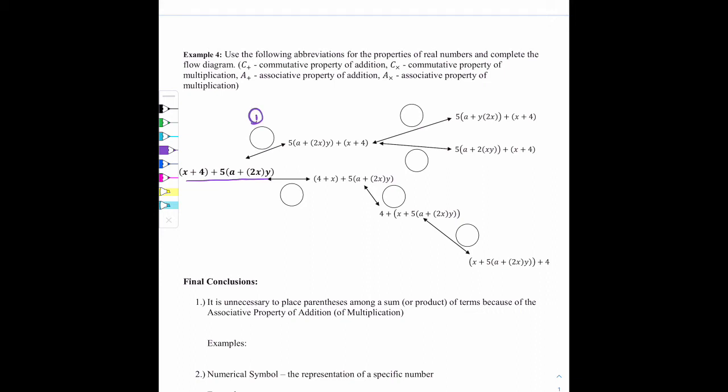So if we take a look at this one first, and we can go in any order we want. I'm just choosing that one first. If I try to take a look at the difference from this expression to this expression, I'm going to notice that the order has changed. The 5(a+2xy) was second in this first one. And now you can see it's first in this next one. So that means the order has changed and it changed with addition. So this is going to be C+, commutative of addition, or commutative property of addition.